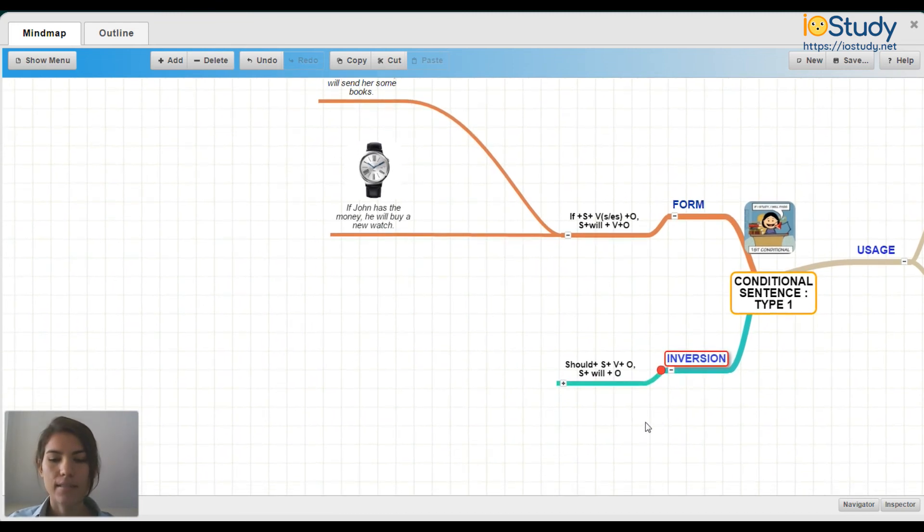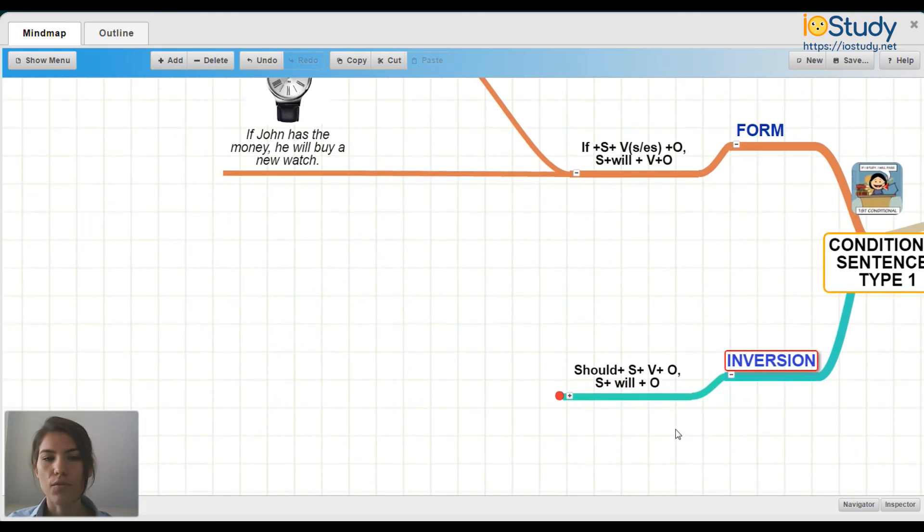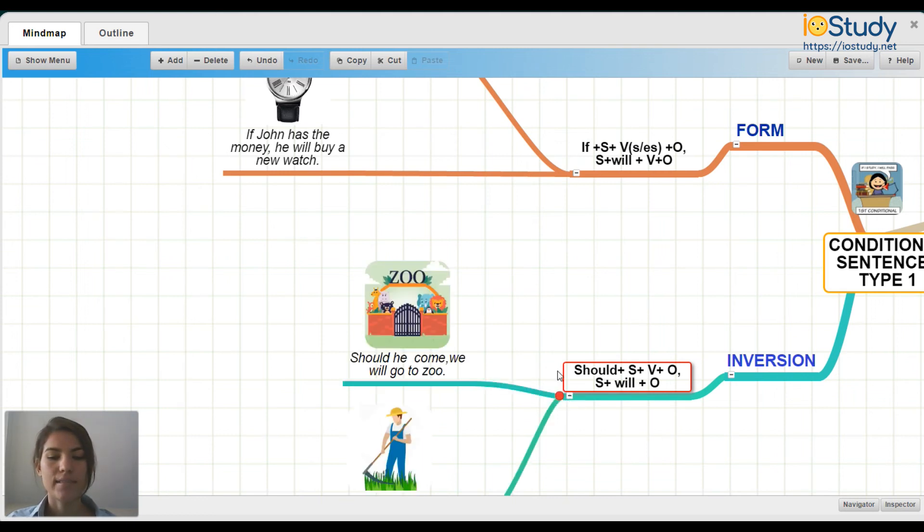Expand. Here is the inversion form. Should plus subject plus verb plus object comma subject plus will plus object. Okay. Let's see some examples.